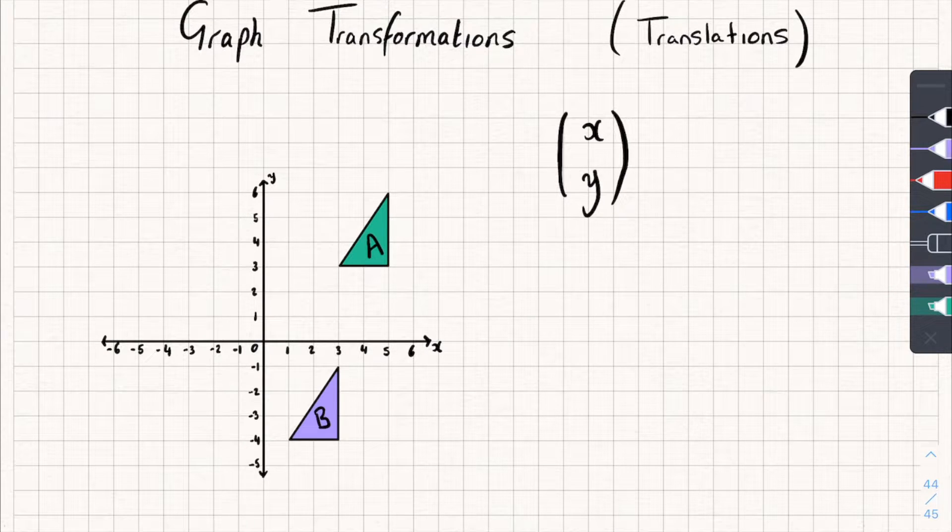And so the x element, or the top number here, that tells us how far to the right or to the left the shape has moved. So if the shape has moved to the left, it's a negative number. So if it's moved two squares to the left, we'd write negative two.